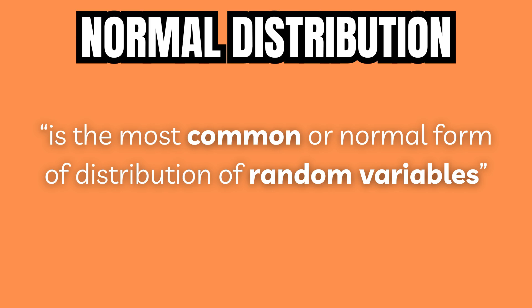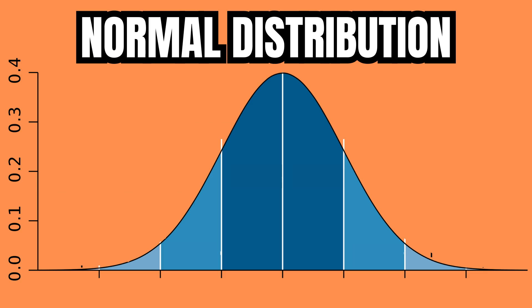A data set that follows a normal distribution can be visualized using a symmetrical bell-shaped curve where the mean is the middle point of the curve and the curve stretches three standard deviations to both sides of the mean.